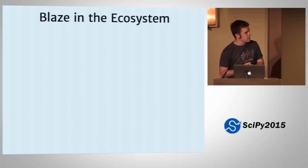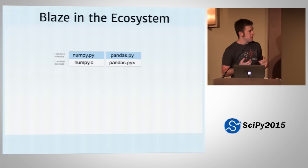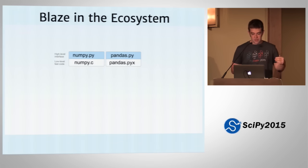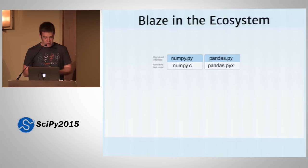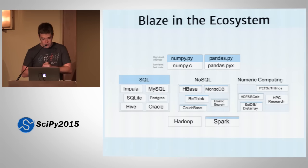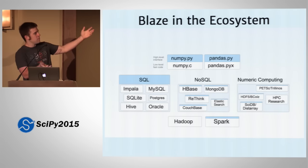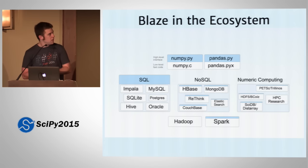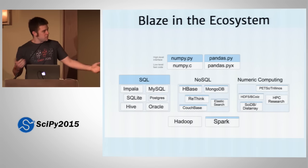So how does it fit into the rest of the PyData ecosystem? A lot of systems, like NumPy and Pandas, have two layers: a user-facing interface and some low-level code that implements their algorithms. NumPy has multi-array.c and Pandas has a bunch of Cython files. The blue is the high-level interface and the white is the low-level fast code. You see this approach in many different systems — SQL has things like Impala, MySQL, SQLite, and so forth. There's the whole NoSQL ecosystem, numeric computing, and then Hadoop and Spark.